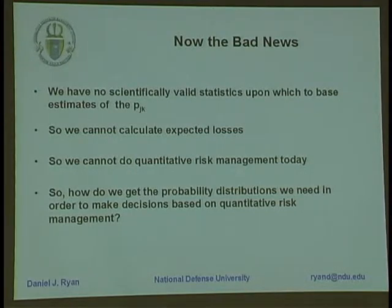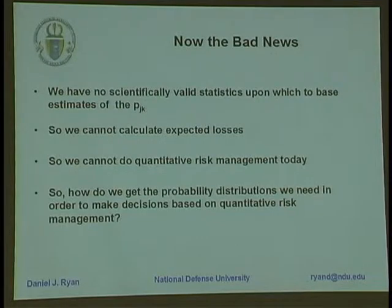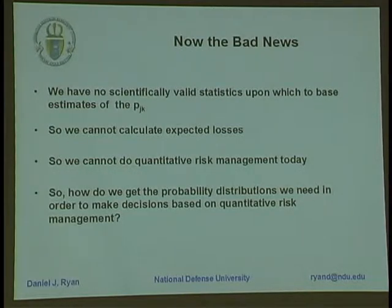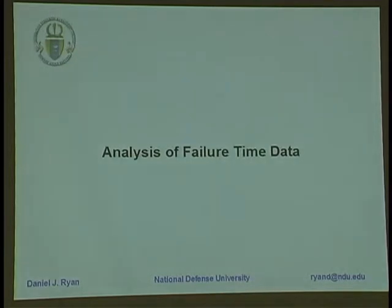We can't do quantitative risk management today. It's impossible to do it, in spite of all those books that tell you to calculate the ALE and the SLE and the ARO and all those other things. So the question that Julie and I have been addressing for the past year and a half is: how do we get those probability distributions? How can we actually create those numbers?